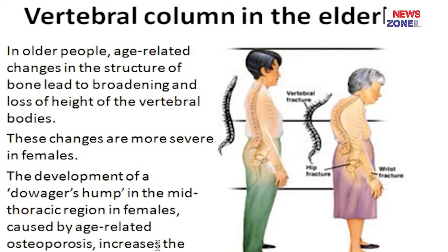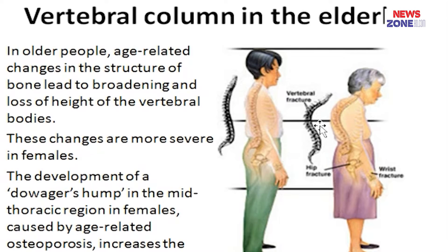In the elderly, age-related changes occur in the structure of the vertebra, leading to broadening and loss of height of the vertebral column body. These changes are most notable in females, causing a deformity like the dowager's hump in the mid-thoracic region. Kyphosis becomes more pronounced and cervical lordosis is also more pronounced, associated with osteoporosis.